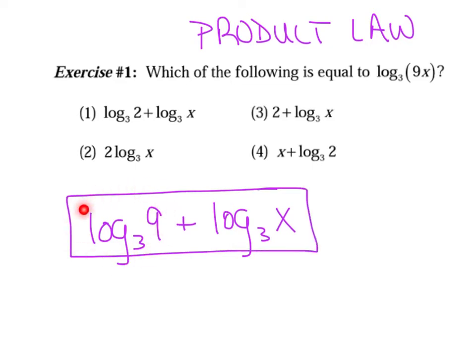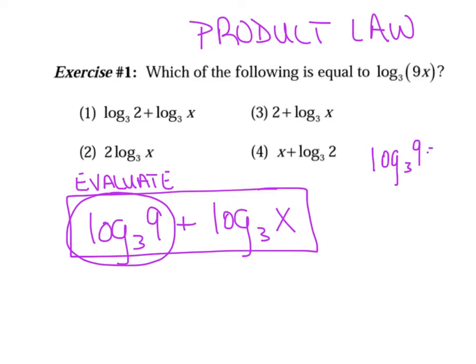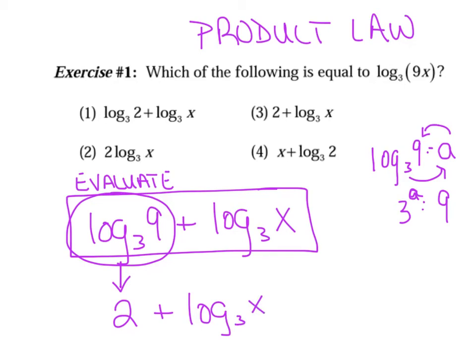None of the choices match quite yet because that first term can be simplified. We've evaluated log base three of nine before. Asking three raised to what power equals nine — the answer is two. So that whole expression is a two. There's nothing we can do with the second term because it has a variable. And it matches choice number three.